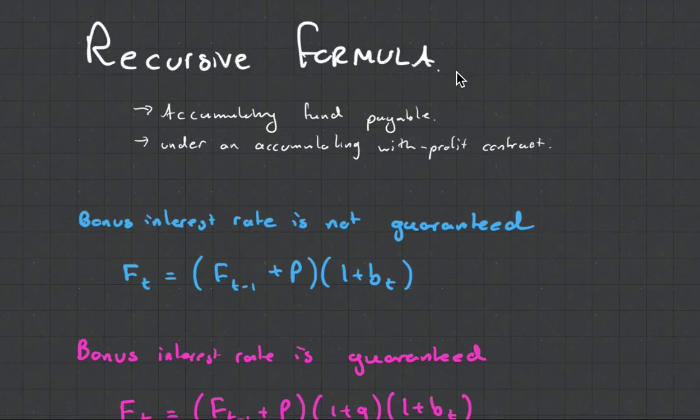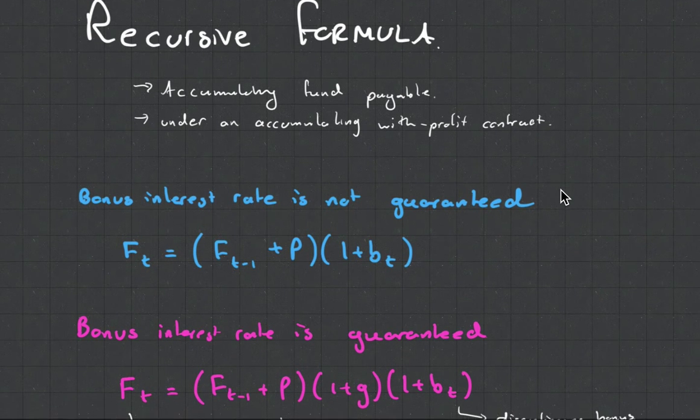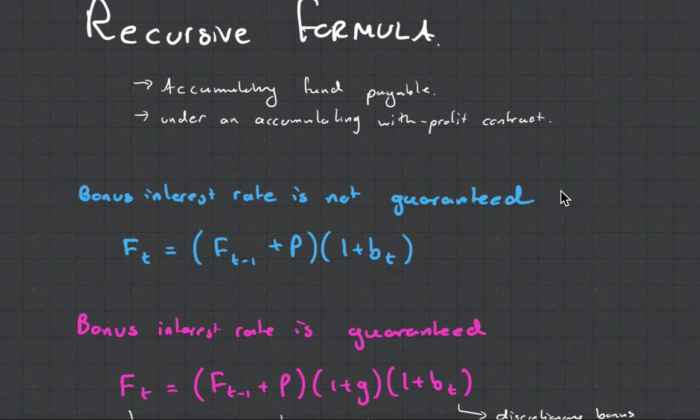We're going to be talking about the recursive formula, which is basically the accumulated funds payable under an accumulated with profit contract. The recursive formula is when bonuses are involved - remember my last video was about bonuses. Check that out if you need help in that area.